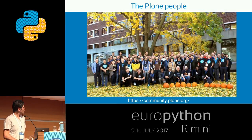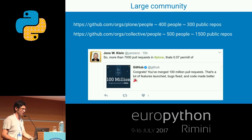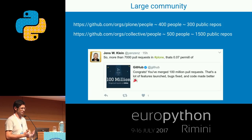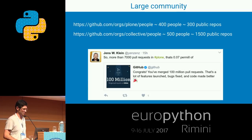The Plone community is very solid. On GitHub, we have an organization with 400 people dealing with about 300 public repositories. We also have another organization called Collective, which contains add-on packages not yet in the core — for example, Solr integration, Elasticsearch integration, and whatever integrations you want. There are even more people there, and it contains 1,500 public repositories.